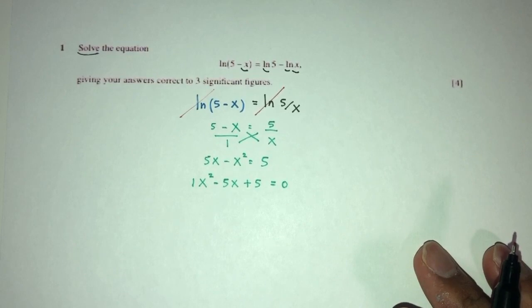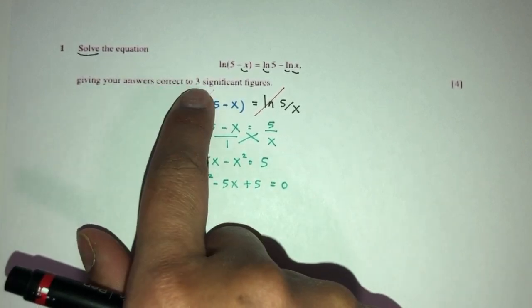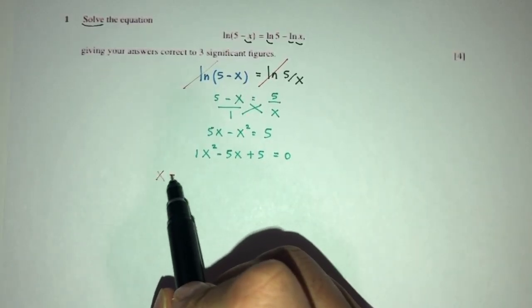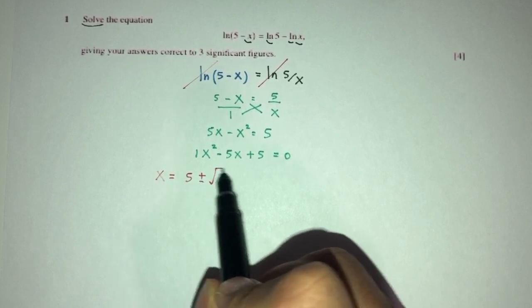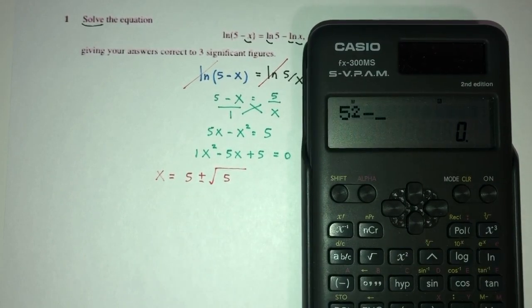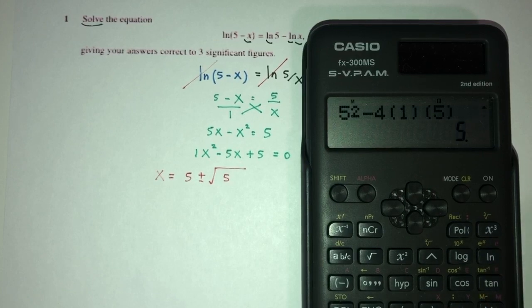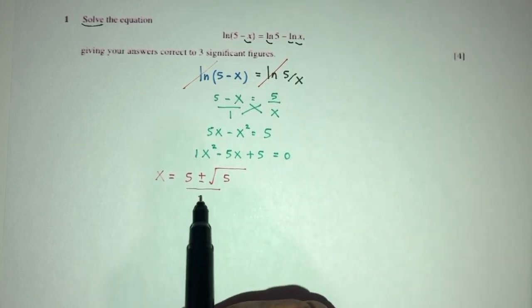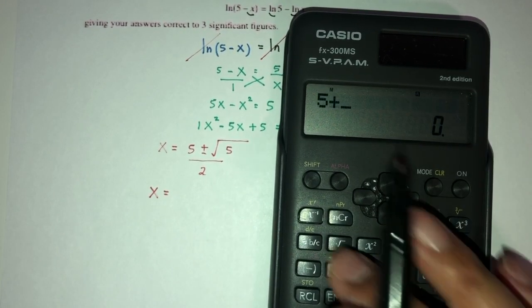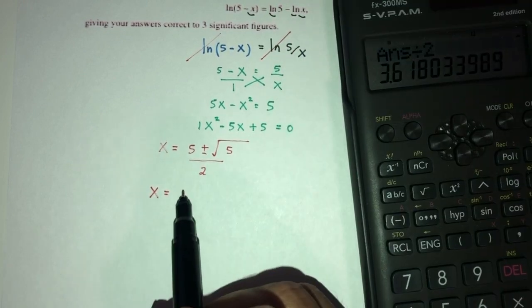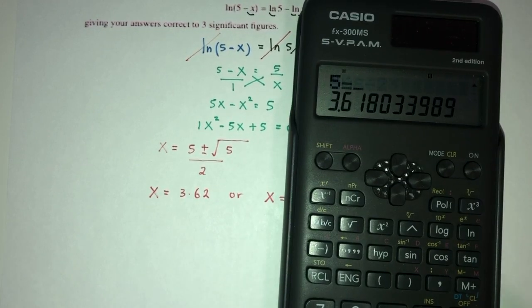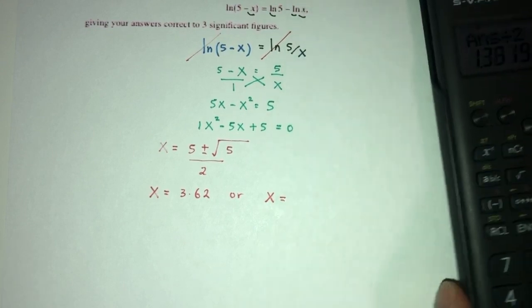As you can see, this is a quadratic equation. Since they asked you to provide answers to 3 significant figures, we use the quadratic formula. So x equals minus b — that's 5 — plus or minus: b squared is 25, minus 4 times 1 times 5, all divided by 2a which is 2. So x will be 5 plus root 5 divided by 2, which is 3.62, or 5 minus root 5 divided by 2, which is 1.38.